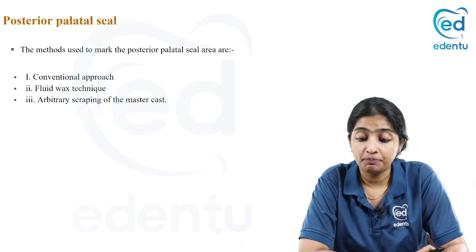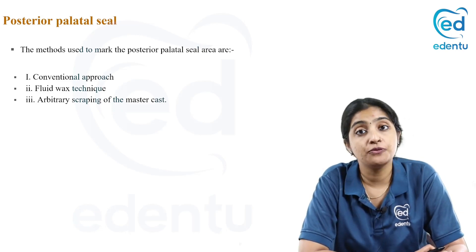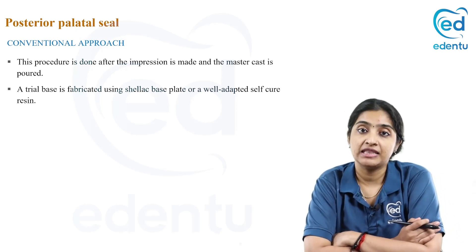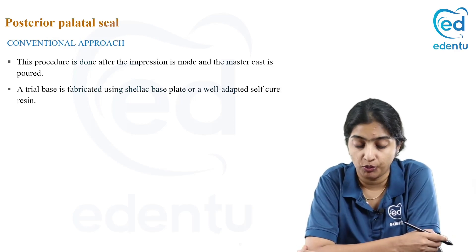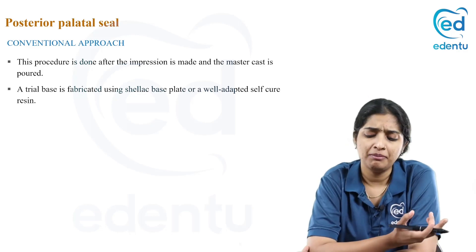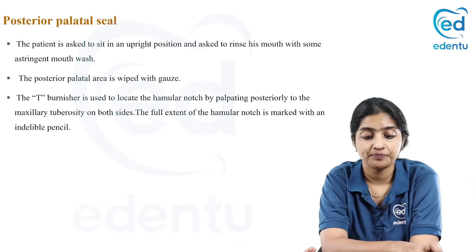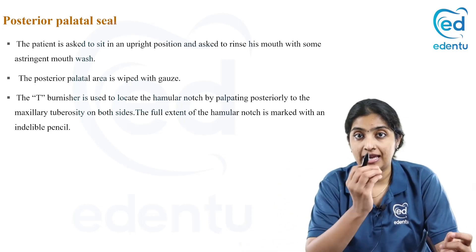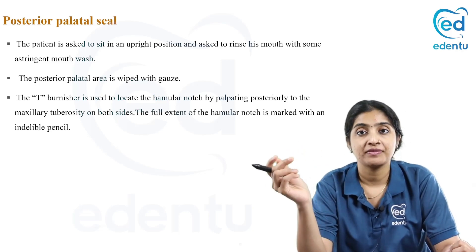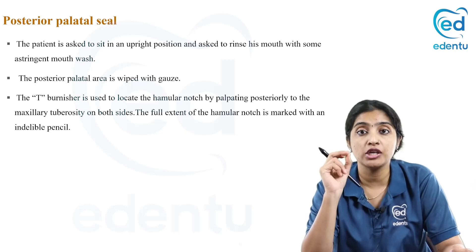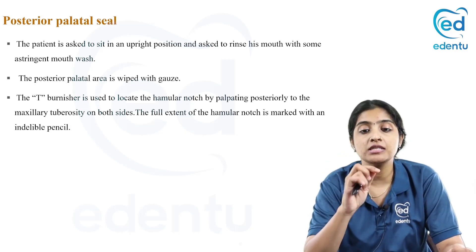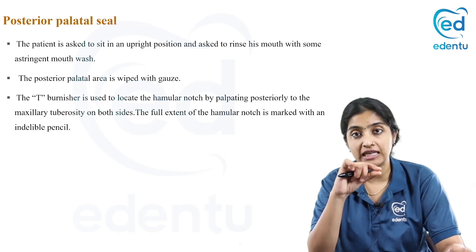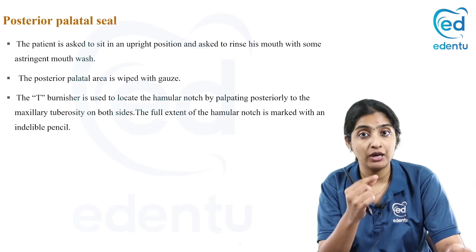The methods used to mark the PPS are three techniques: the conventional approach, the fluid wax technique, and the arbitrary scraping of the master cast. In the conventional approach, this procedure is done after the impression is made and the master cast is poured. First you make a trial denture base, using shellac or a cold cure denture base. The patient is asked to sit in an upright position and the mouth is rinsed. The PPS area from hamlar notch to hamlar notch is wiped with gauze. A T-burnisher is used, and you run it over the ridge from the maxillary tuberosity — when you go posterior to the maxillary tuberosity, you find a dip where it falls, and that is your hamlar notch.